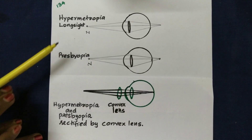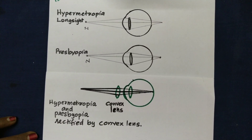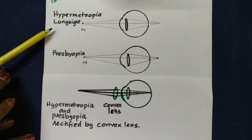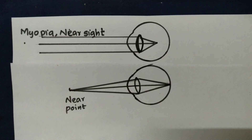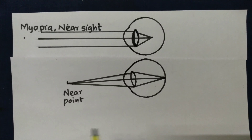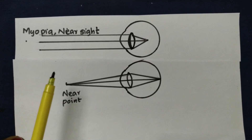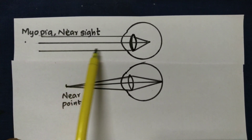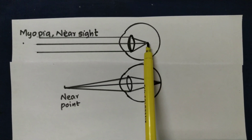This is hypermetropia — long sighted. Near sight is also known as myopia. The near point is a critical area — that name is near sight. The image is formed in front of the retina.